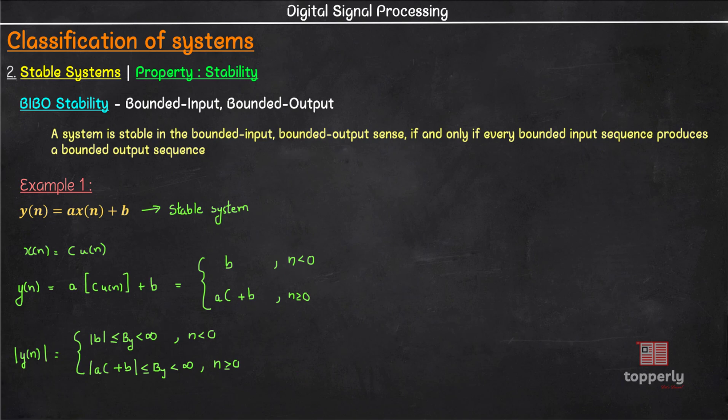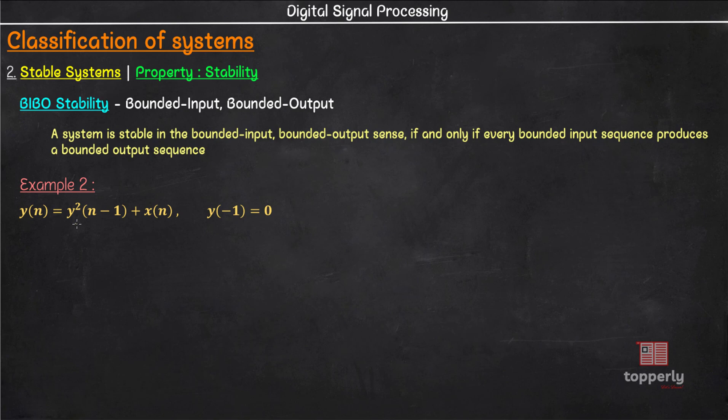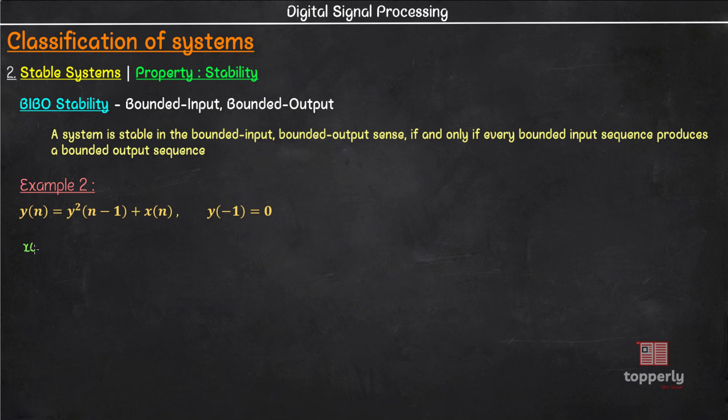...we have the system y(n) = y(n-1)² + x(n) and y(-1) = 0. Again, as before we will consider a bounded input signal. Let it be x(n) = c·δ(n). You can also choose x(n) = c·u(n). No problem with that. But I simply chose another input. That's all. So the corresponding output will be...